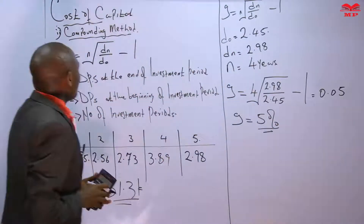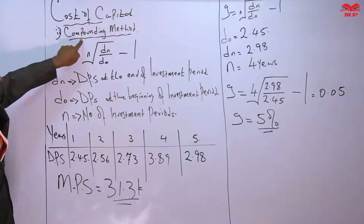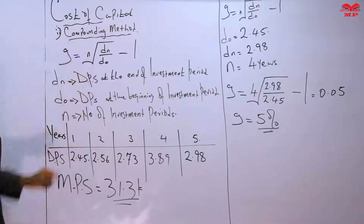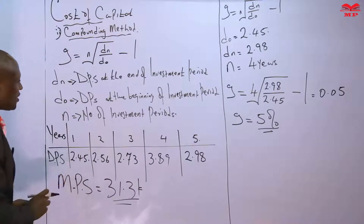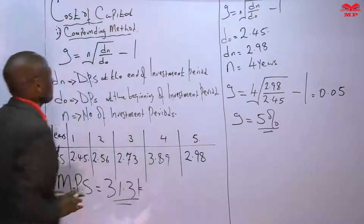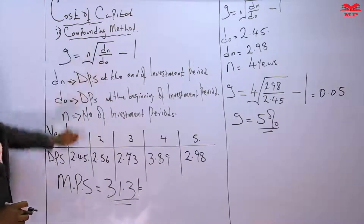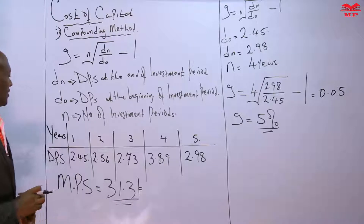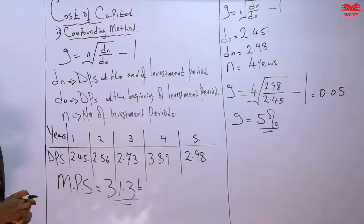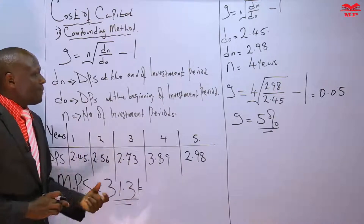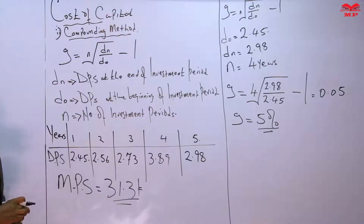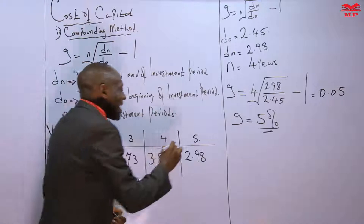The compounding method of determining the growth rate is given by g equals the nth root of Dn over D0. In our question, we've established n as four periods, Dn — dividend at the end — as 2.98, and D0 — dividend at the beginning of the investment period — as 2.45. Using these data, we are able to get the constant growth rate per annum, G, which is equal to 5%.